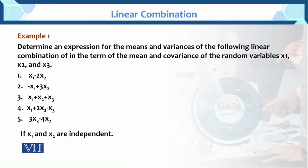Now let us look at this linear combination through an example to understand it better. Example 1: Determine an expression for the mean and variance of the following linear combinations in terms of the mean and covariance of random variables x1, x2, and x3. The condition given is that x1 and x2 are independent.